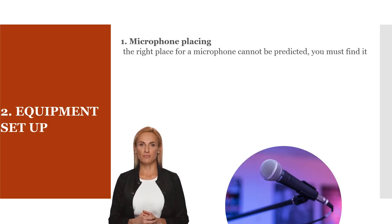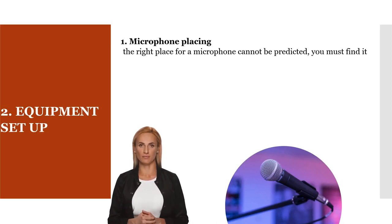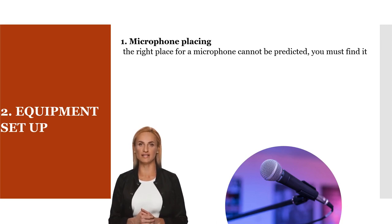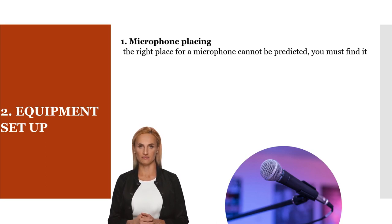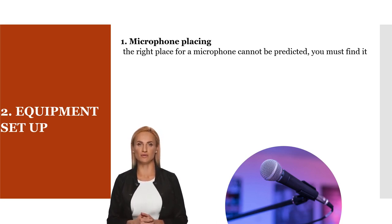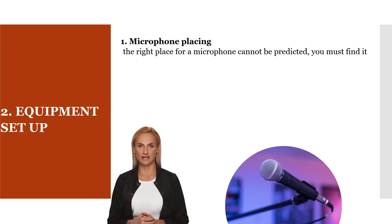How to set up equipment correctly. The first step: microphone placing. The right place for a microphone cannot be predicted — you must find it. Therefore, be ready to experiment, listen to the audio to be recorded, and move the microphone around the space until you find a position where the audio sounds most balanced. The mic should not be too far from the source of sound because it will pick up a lot of background noise.